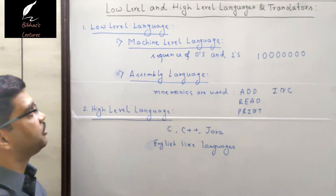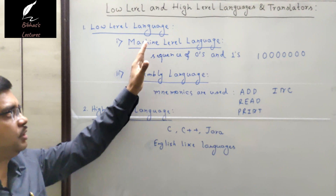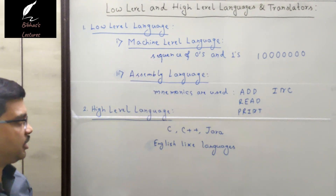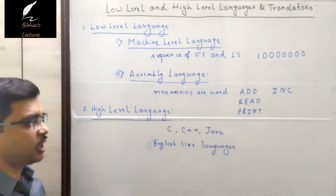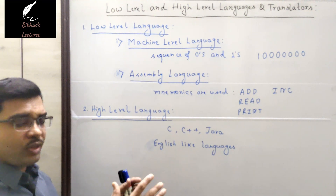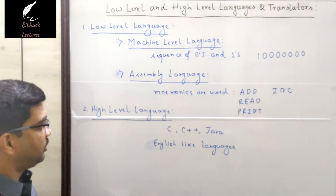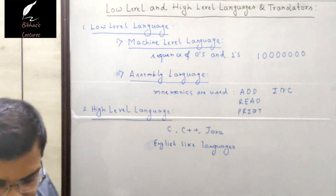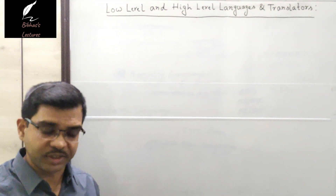So there are mainly two types of languages: low-level and high-level. Low-level is again two types — machine level language and assembly language — and then there are high-level languages. Now we are going to discuss the different types of translators available in computer programming.